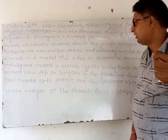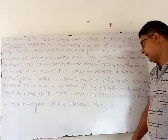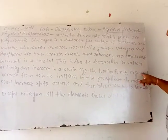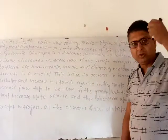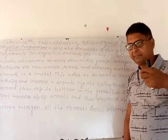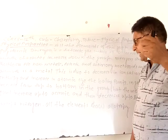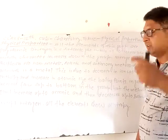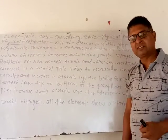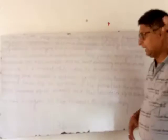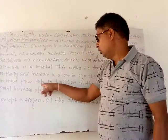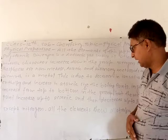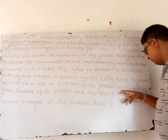In Group 15, going from top to bottom: ionization enthalpy decreases, atomic size increases, and boiling point generally increases. That is, as we move down Group 15, atomic size increases, and boiling point generally increases.